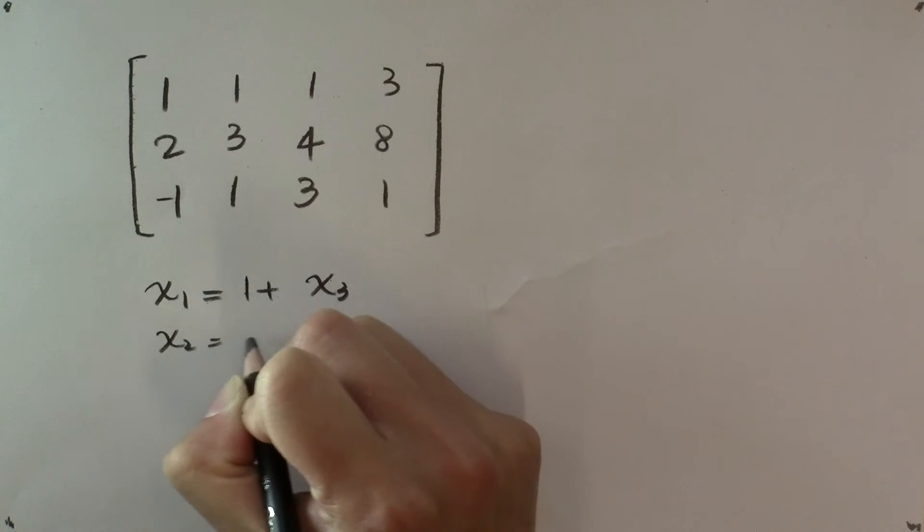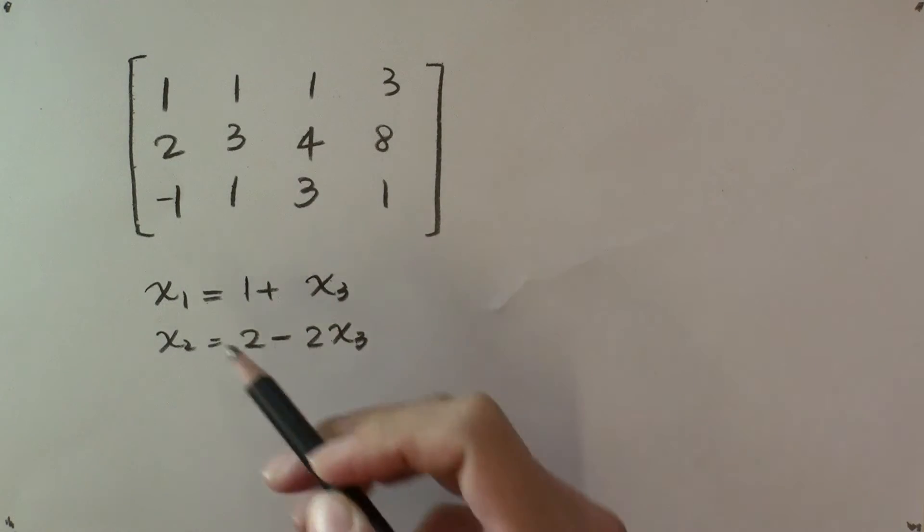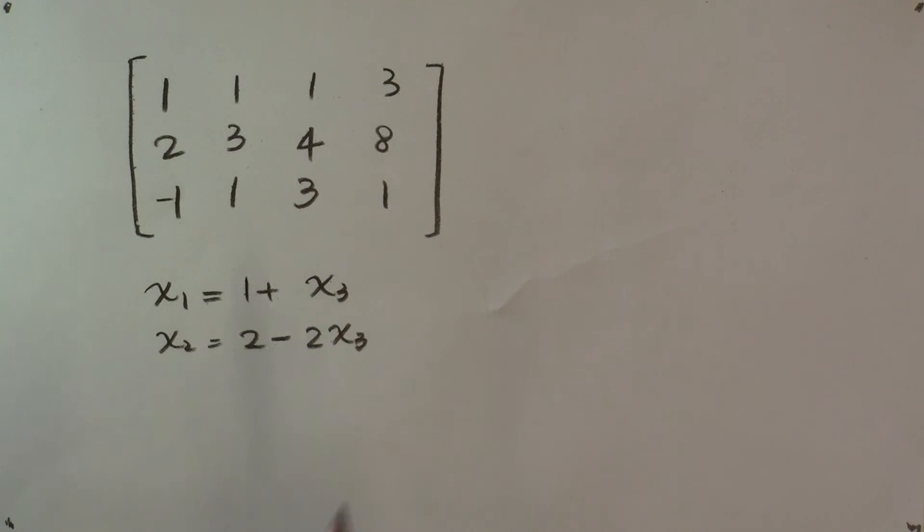And so can x₂. So x₃ is a free variable where x₁ and x₂ can be expressed in terms of x₃. And what does this mean?